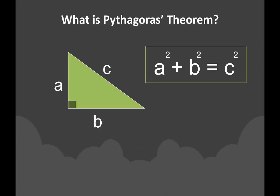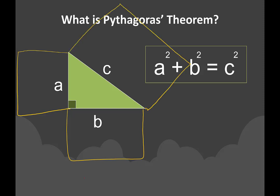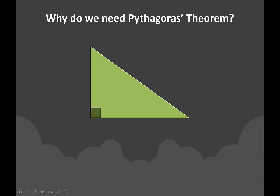So, what is Pythagoras' Theorem? Pythagoras discovered that if you square the short two sides of the right-angled triangle, it will be equal to the square of the longest side of the triangle. So, the formula is: a squared plus b squared is equal to c squared. In order to work out a missing side of a right-angled triangle, we need to use Pythagoras' Theorem, and note that it only works on a right-angled triangle.